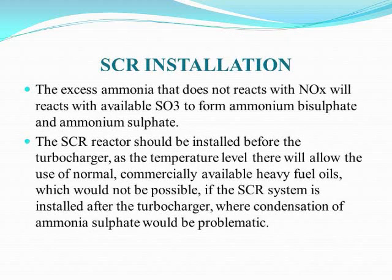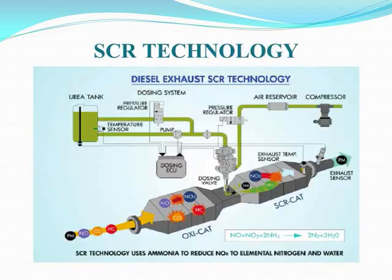A disadvantage of ammonia slip is the formation of ammonium sulfates. A small portion of sulfur dioxide in the flue gas may be oxidized to sulfur trioxide, which then reacts with ammonia at elevated temperatures to form ammonium bisulfate or ammonium sulfate.